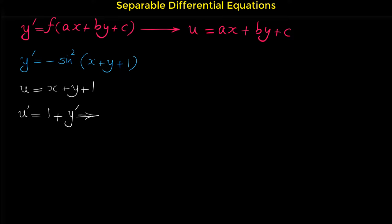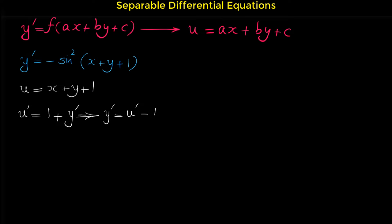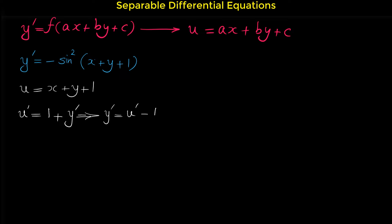Now from this equation, we solve for y prime. If we move 1 to the other side, y prime equals u prime minus 1. Now in this differential equation, we can replace x plus y plus 1 with u and we can replace y prime with u prime minus 1. So everything in this differential equation is now in terms of u.